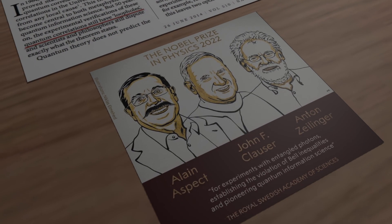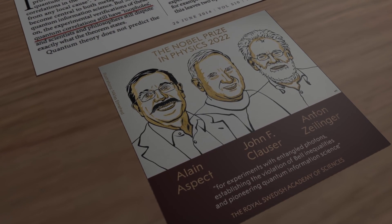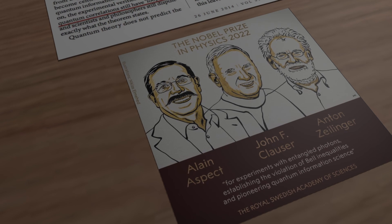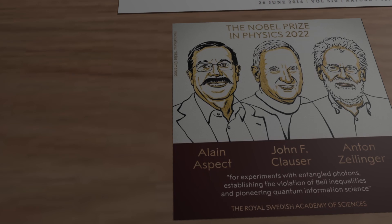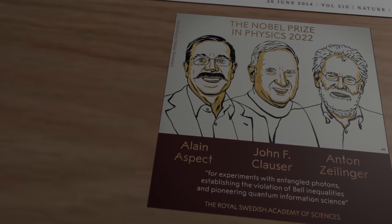And not to forget the groundbreaking experiments on Bell's inequality, conducted by Alain Aspect, John F. Clauser and Anton Zeilinger during the 70s, 80s and 90s, which earned them the 2022 Nobel Prize in Physics.